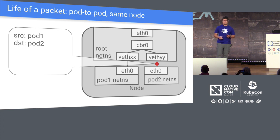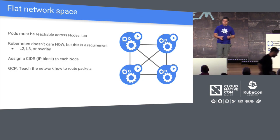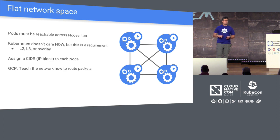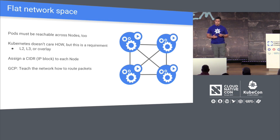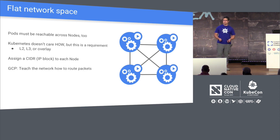You have a flat network space inside of this model, but you also want pods to be reachable across nodes. It shouldn't matter where the pod is — Kubernetes should handle that. Kubernetes doesn't care how we do routing between pods: you can use L2, L3, overlays, carrier pigeons, as long as traffic can reach one pod to the other even across nodes. You assign a CIDR block to each node so that each pod can have its own IP address.